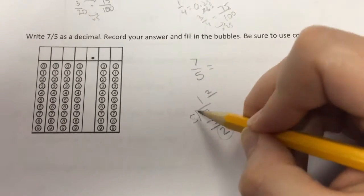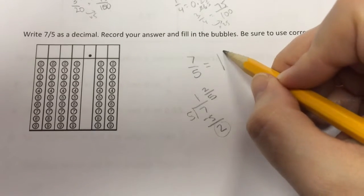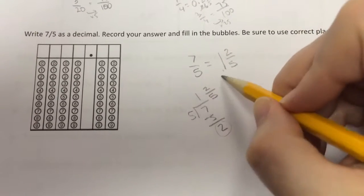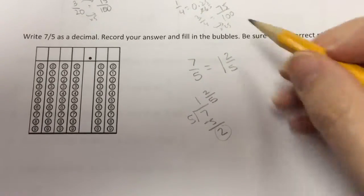My remainder becomes my new numerator, and my five stays my denominator. So seven-fifths is the same as one and two-fifths. My answer becomes my whole number. My remainder becomes my new numerator. One and two-fifths.